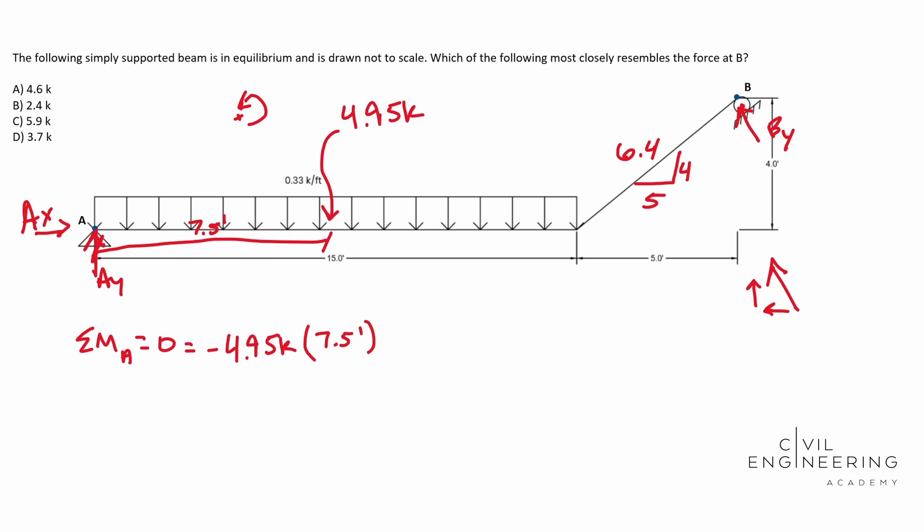We're going to go plus since it's acting in the positive moment direction, and we're going to use this ratio to our advantage. So we're going to go 5 over 6.4 and we're going to multiply that by our force, which is BY, times four feet. This is your perpendicular direction, that four feet. 5 over 6.4, we just solved for this guy, that smaller X force.